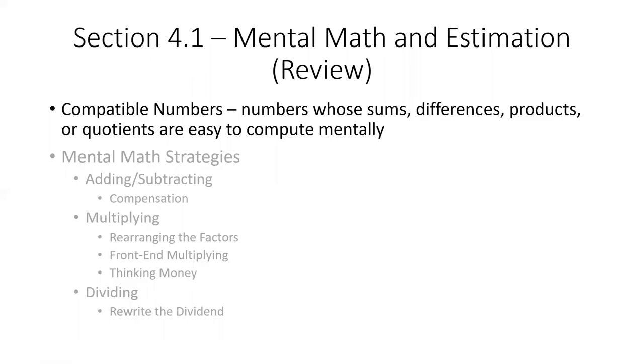We work a lot with compatible numbers. Compatible numbers are going to be numbers whose sums, differences, products or quotients are easy to compute mentally. Most of the time, it's going to make the most sense to make compatible numbers be either multiples of 10 or multiples of 5, just because those are easier for us to compute mentally.